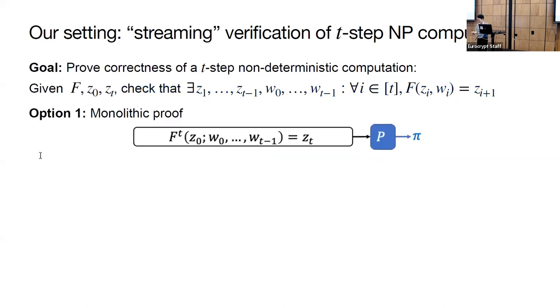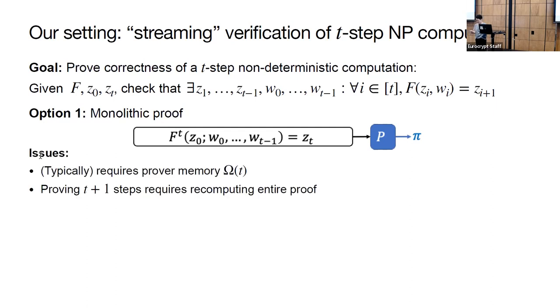One way to check the computation is to use a monolithic proof. We run a proof that takes as input the function f, z0, and zt, as well as all the witnesses, all the zi's and wi's, for the entire computation. However, the prover has to remember all the intermediate states and also the witnesses. This requires the prover to have memory linear in t. Further, given a proof for a t-step computation, proving t plus 1 steps requires recomputing the entire proof.